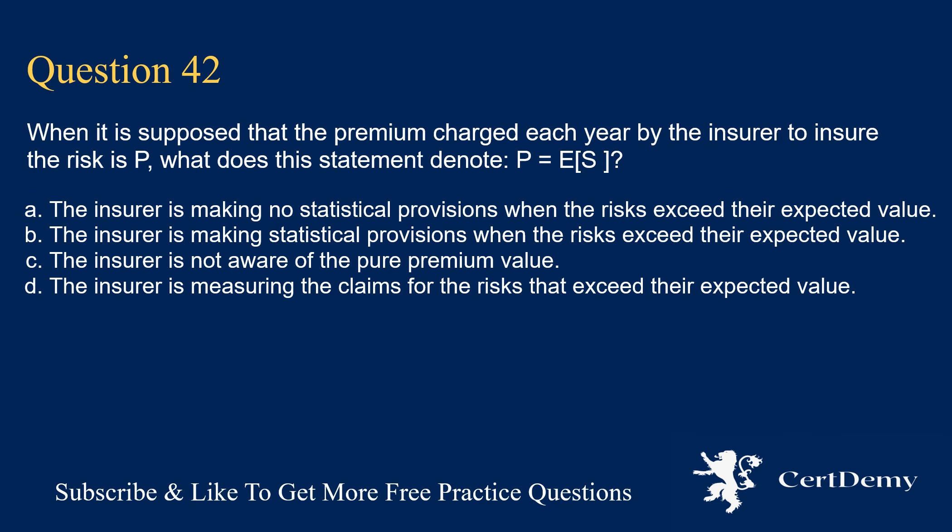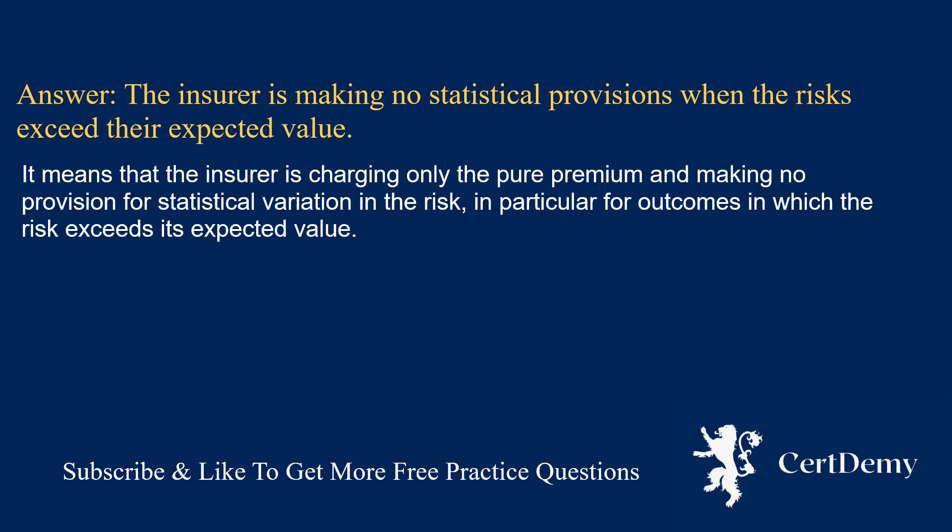Question 42. Which statement is correct regarding the premium and financial ratios? Options: financial ratios are a comparison of four different numbers from financial statements; they provide the investor with quick information for an informed decision; they are broad and not entirely precise with two types of most useful financial ratios; the insurer is measuring the claims for risks that exceed their expected value. The answer is: the insurer is making no statistical provisions when the risks exceed their expected value, meaning the insurer is charging only the pure premium with no provision for statistical variation in outcomes where risk exceeds expected value.